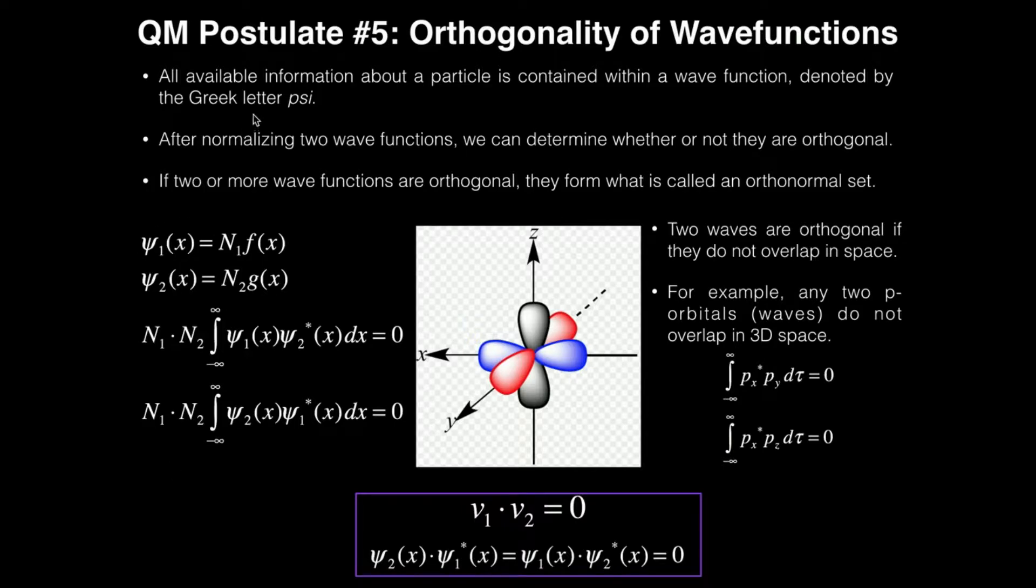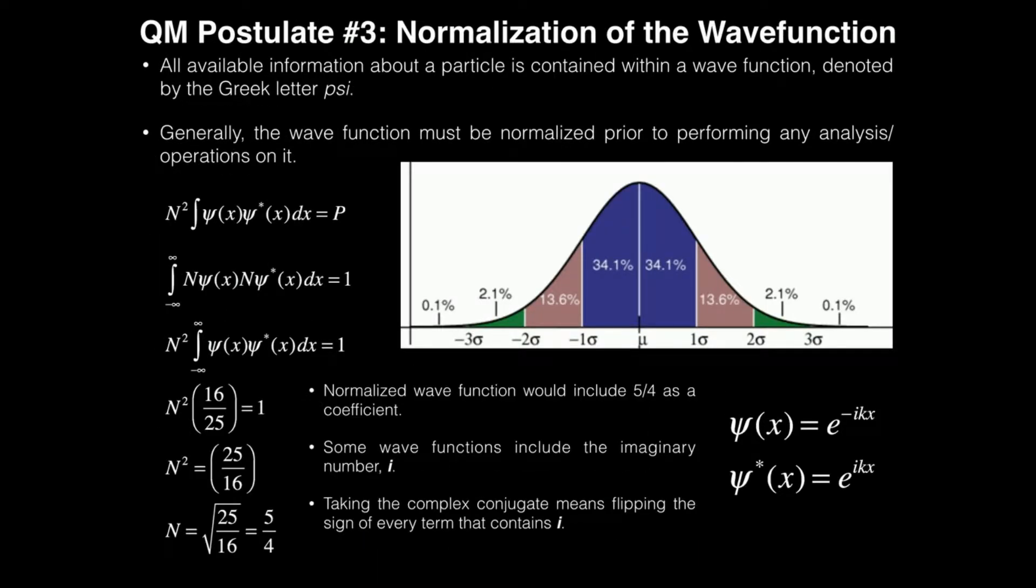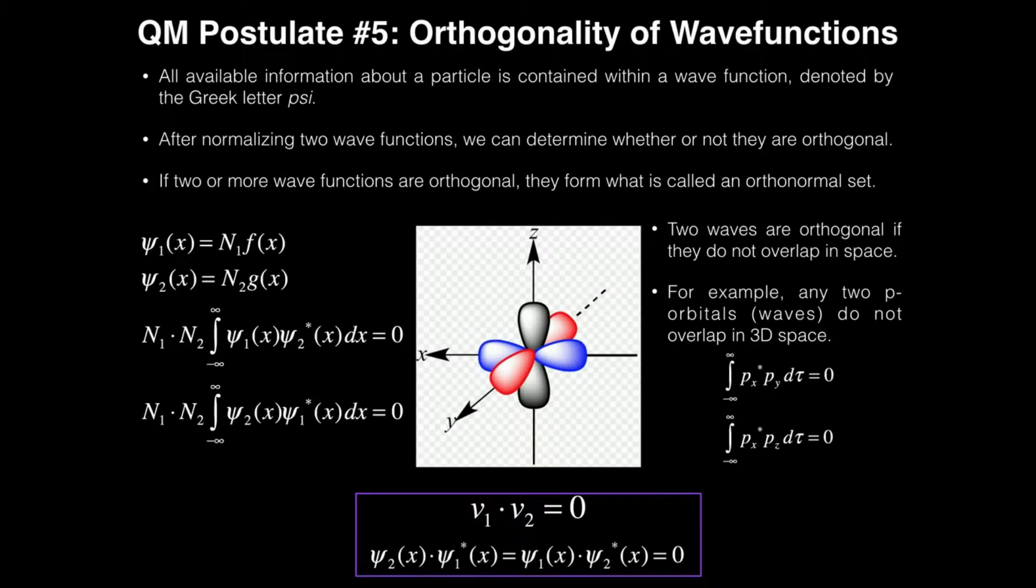We've already introduced the wave function, which is xi. It contains all available information about the particle or a wave in that function. And once we've normalized the two wave functions, which we've talked about in previous videos, and it's very important, we can do a bunch of stuff with it.